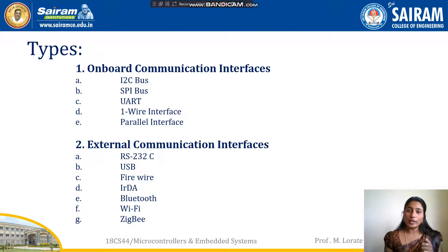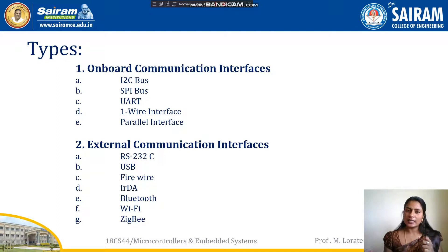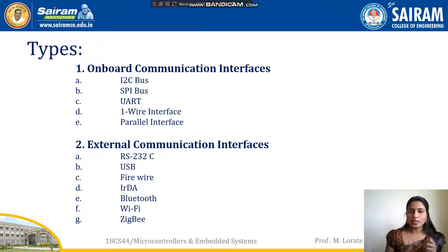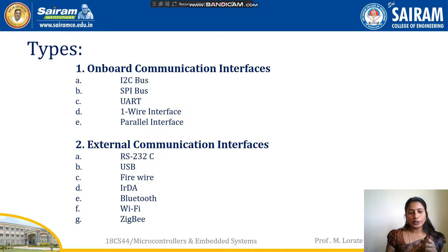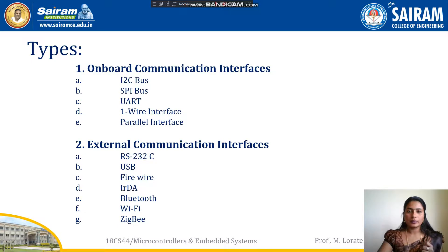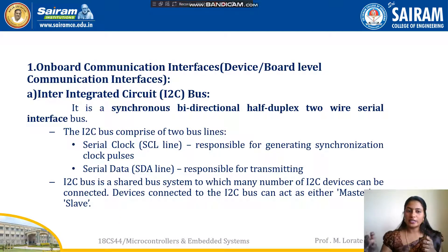External communication interface is responsible for the communication between the embedded system and the outside world. This external communication interface can be either wired media or wireless media, and it can be serial or wireless. Examples of onboard communication are I2C bus, SPI bus, UART, one-wire interface, and parallel interface. External communication examples include wired RS-232 and USB, and wireless Bluetooth, Wi-Fi, and ZigBee.